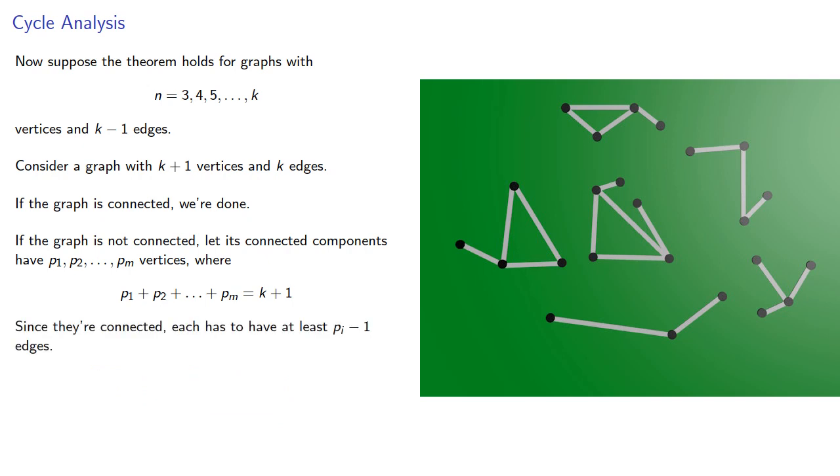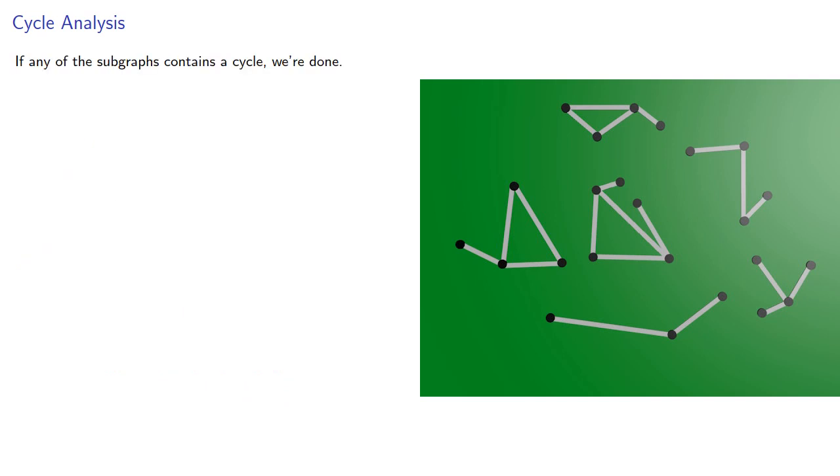And since each of these subgraphs is connected, each has to have at least pi minus 1 edges. If any of the subgraphs contains a cycle, we're done.